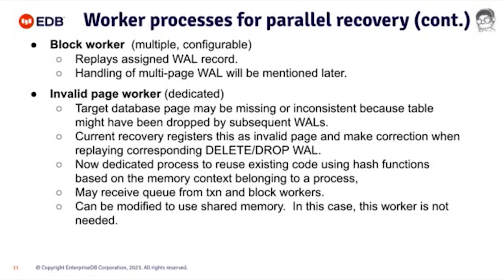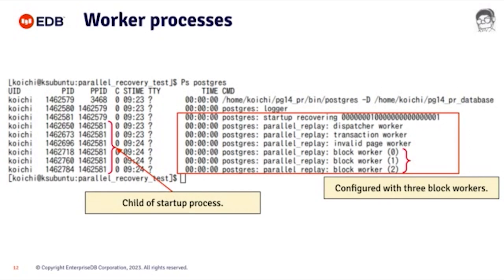When recovery is running, you will see these different workers as different processes — but please note these are not usual backend processes. They are all child processes of the startup process. You can configure more or fewer block workers. To share data and parsed WAL, I'm using dynamic shared memory, which is part of the Postgres core and is widely available even in a startup process environment.